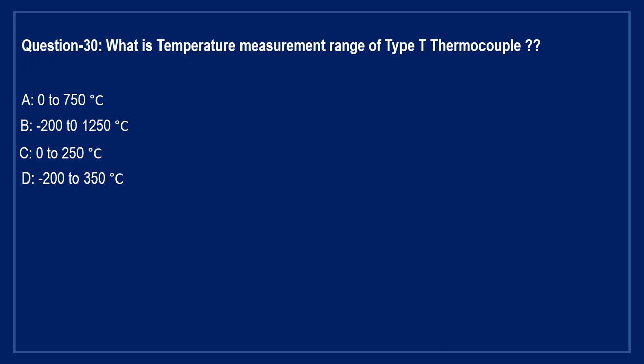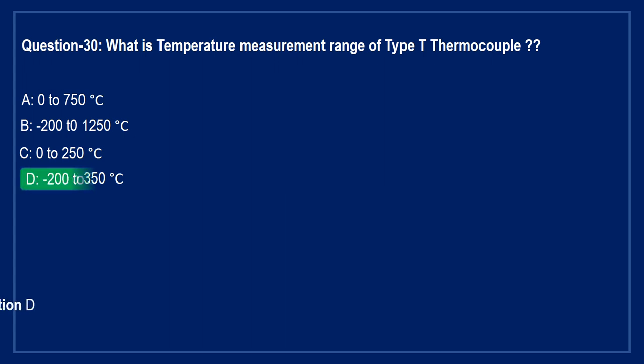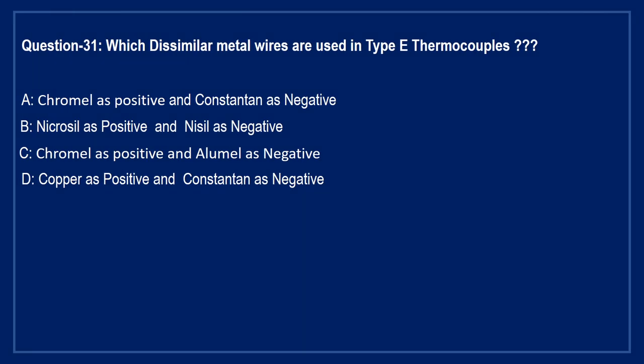What is the temperature measurement range of T-type thermocouple? Option A: 0 to 750°C. Option B: minus 200 to 150°C. Option C: 0 to 250°C. Option D: minus 200 to 350°C. The right answer is Option D — minus 200 to 350 degree centigrade.